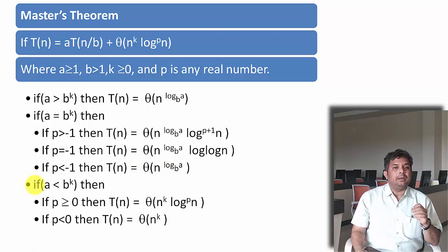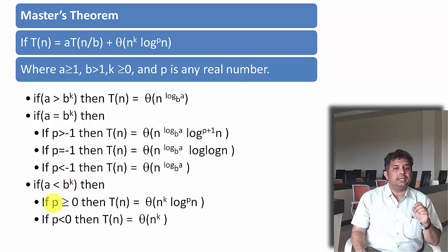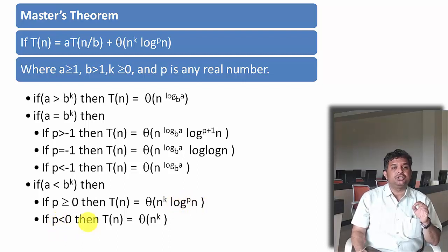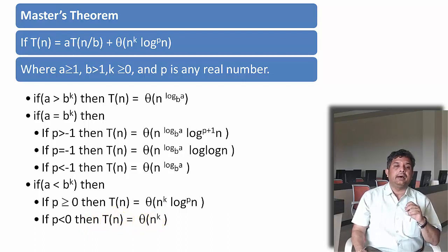Now, one more condition: if a is less than b^k, again we have to check the condition with p. If p is greater than or equal to 0, then the complexity will be Θ(n^k · log^p n). And if p is less than 0, then the complexity will be Θ(n^k).